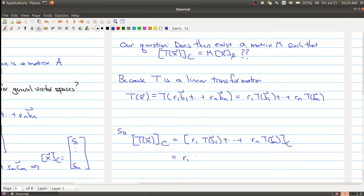We can rewrite this as R1 times the C coordinate of T(b1) plus R2 times where the B coordinate gets sent by T and then its C coordinate and so on.